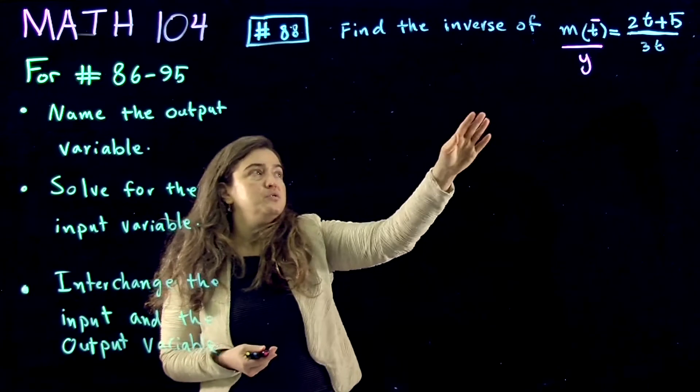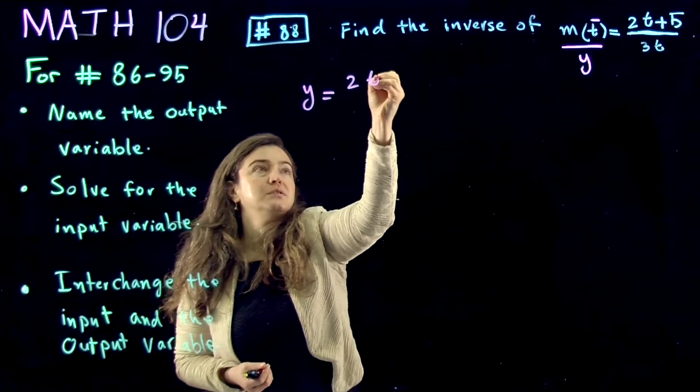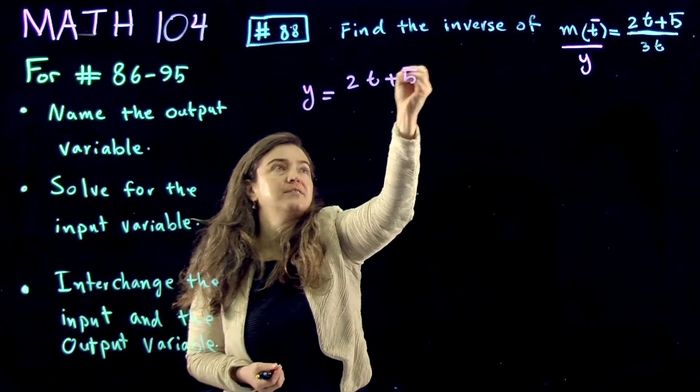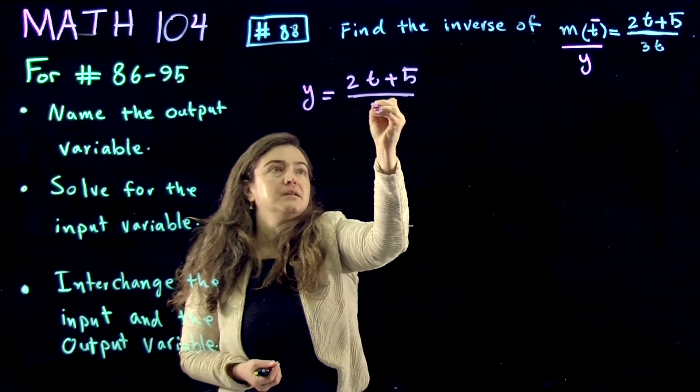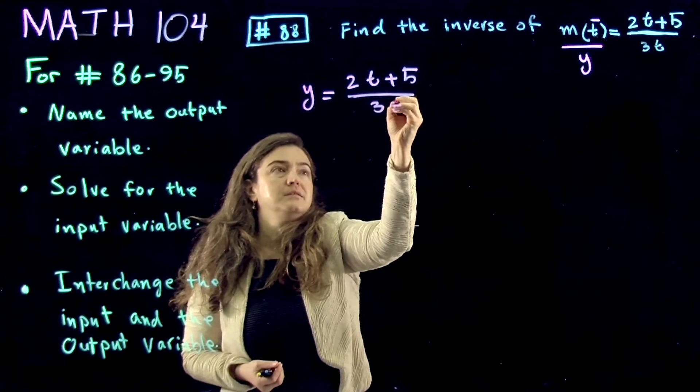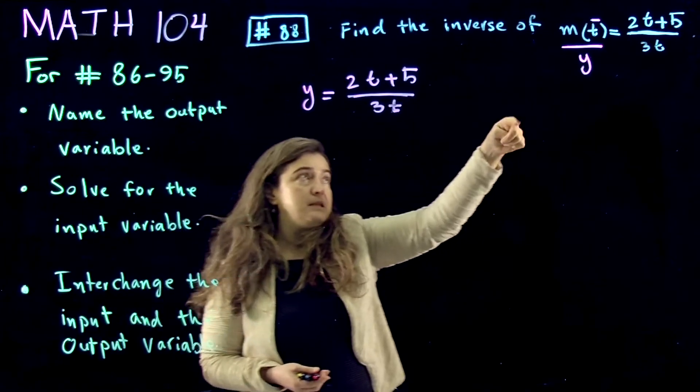Now I'm going to rewrite this. y equals 2t plus 5 divided by 3t. Now in this process, we identify that t is the input function.